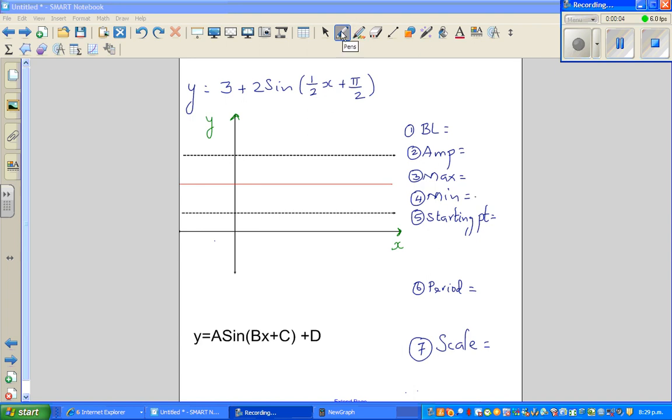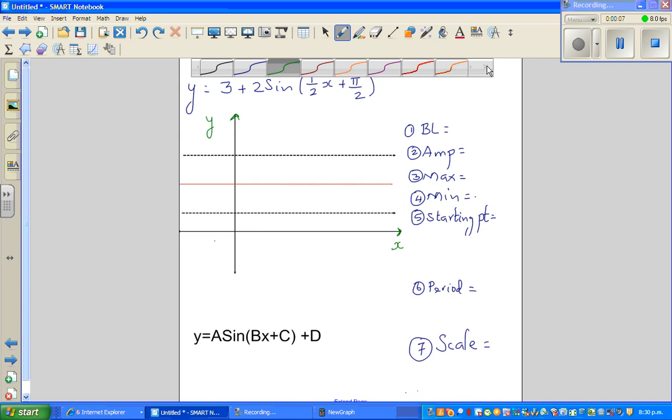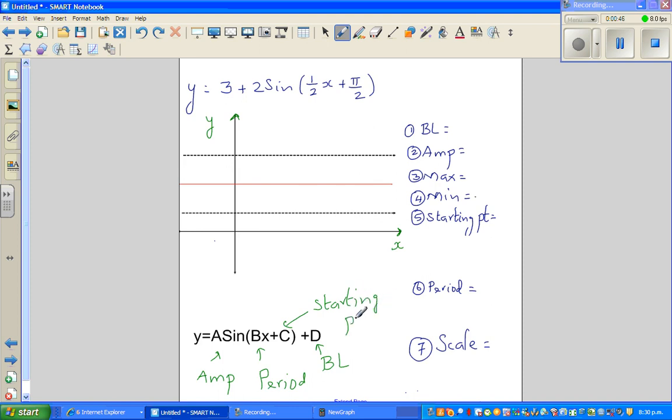Hello, in this video let's see how to graph this equation which has all the features of transformation of a sine graph. This is the general formula of a sine graph or cosine graph: y equals A sin(Bx + C) plus D. I've discussed this in another video. D tells me the baseline, A is the amplitude, from B you can decide the period, and from C you can decide the starting point. These are the four features which help you draw the sine graph.